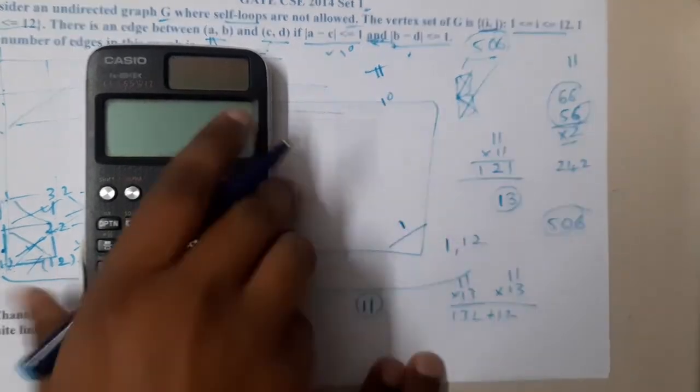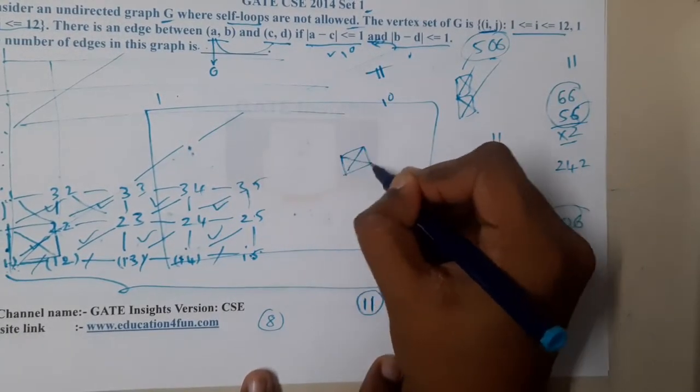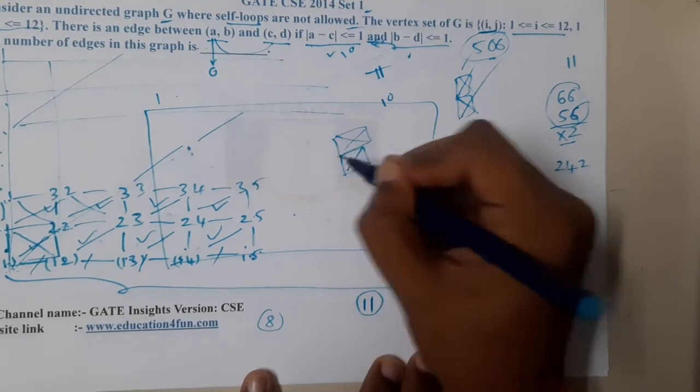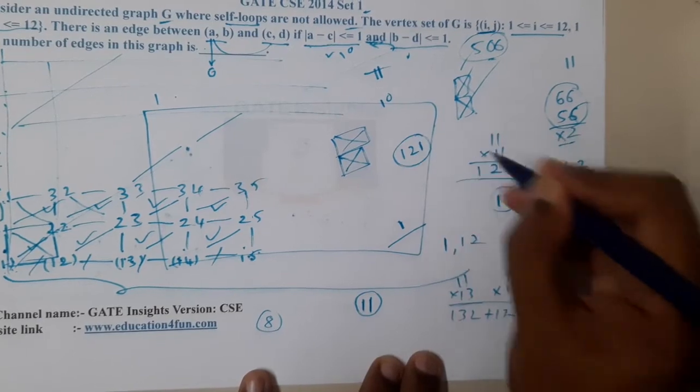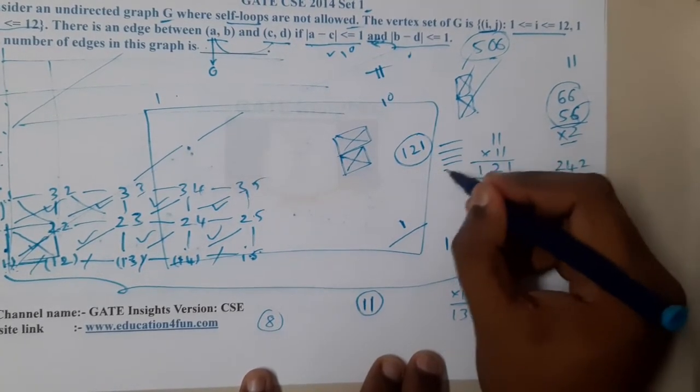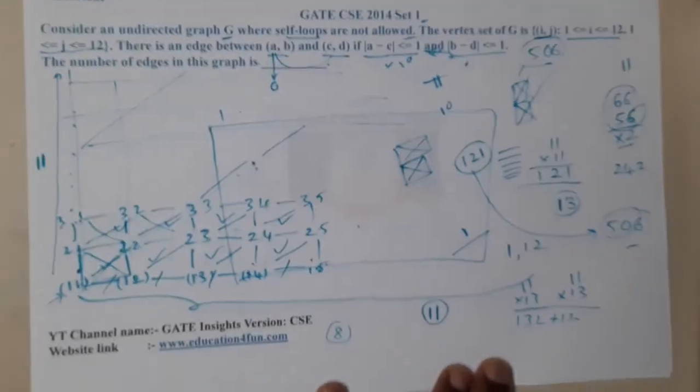Now you got an idea. Basically, each and every square is having a cross inside, and there are total 121 boxes. The total number of edges in them are 506. That's the question they asked.